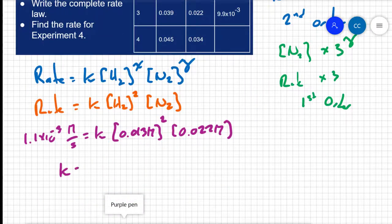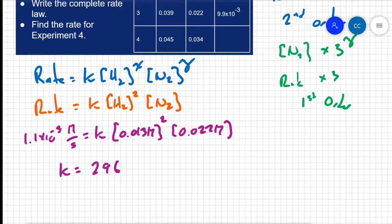So when I solve for K, I get a value of 296 and I want to be conscious of the units. I have molarity per second on the left side, so I'm going to want molarity per second on the right side. On the right side already I have molarity squared and molarity, so I have molarity cubed on the right side already.